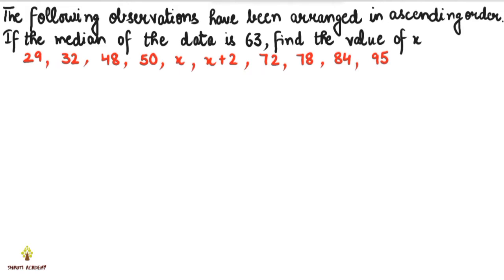The question is: the following observations have been arranged in ascending order. This data is already in ascending order. If the median of the data is 63, then find the value of x.